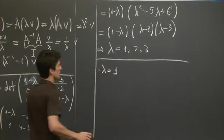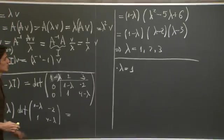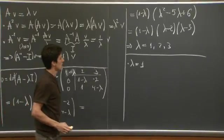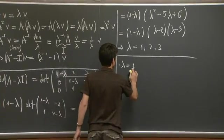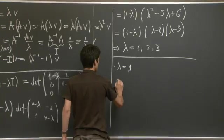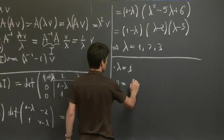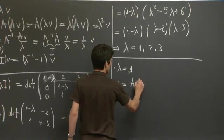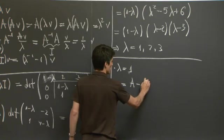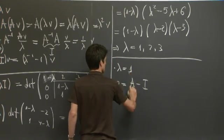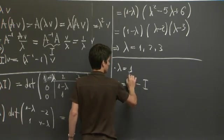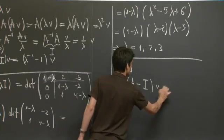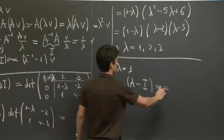Well, let's figure out what the eigenvector associated with lambda equals 1 is. So we know that the eigenvector needs to be in the null space of A minus lambda times the identity. So A minus the identity times V.